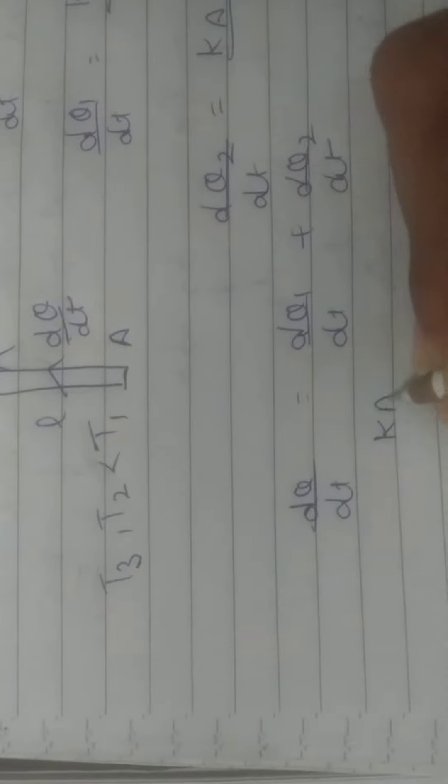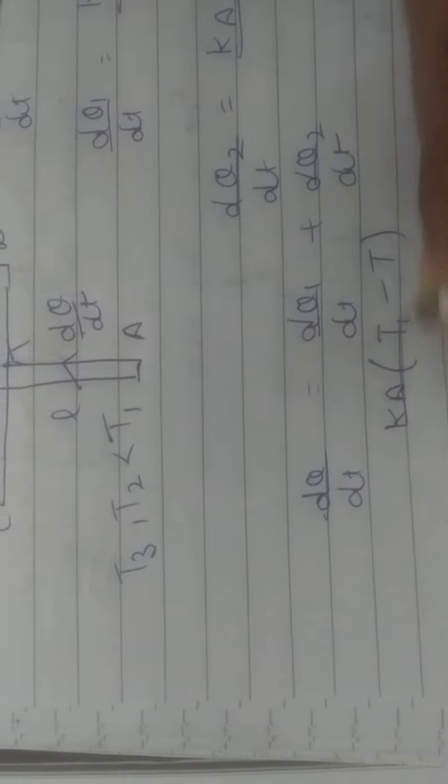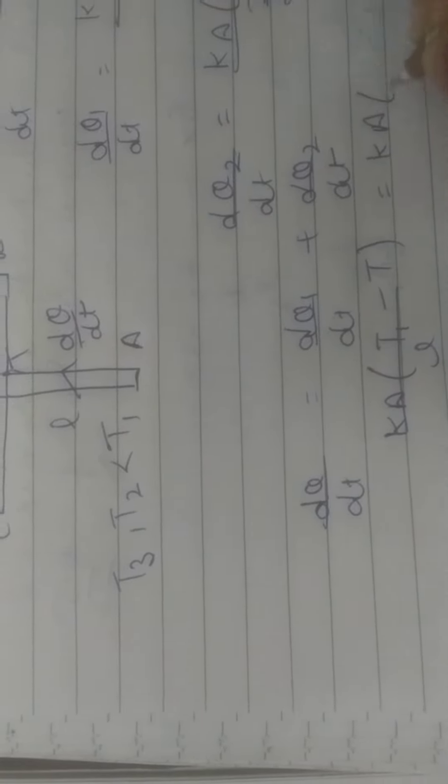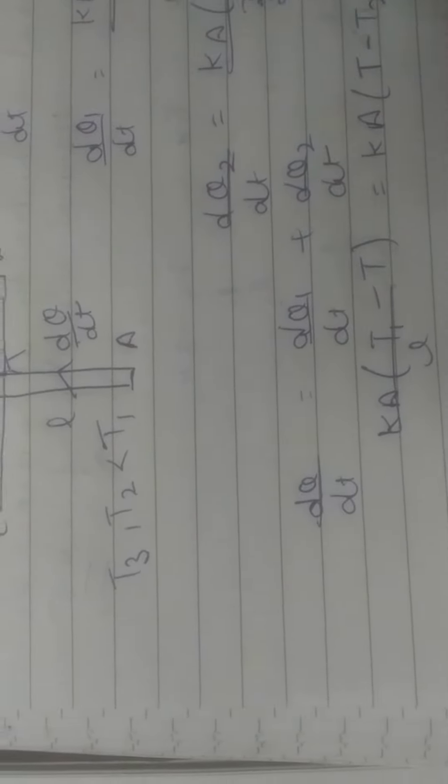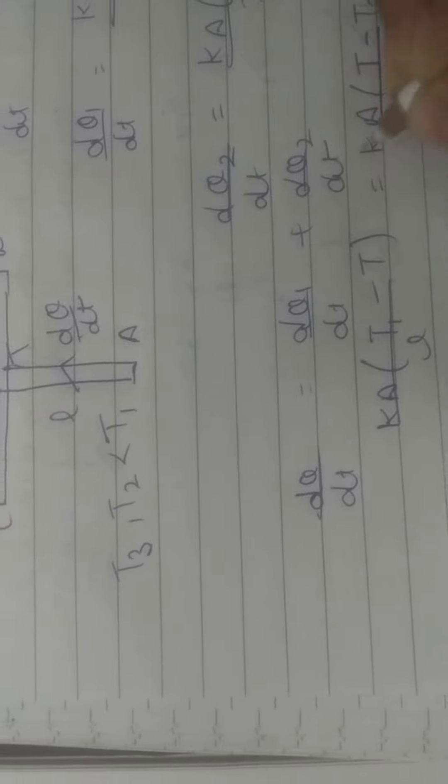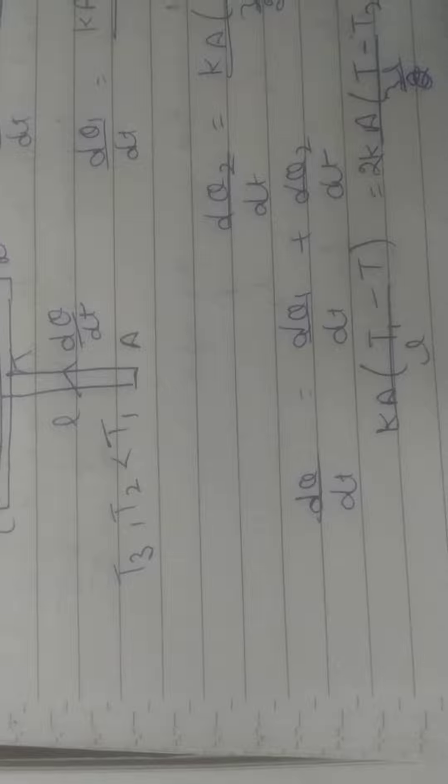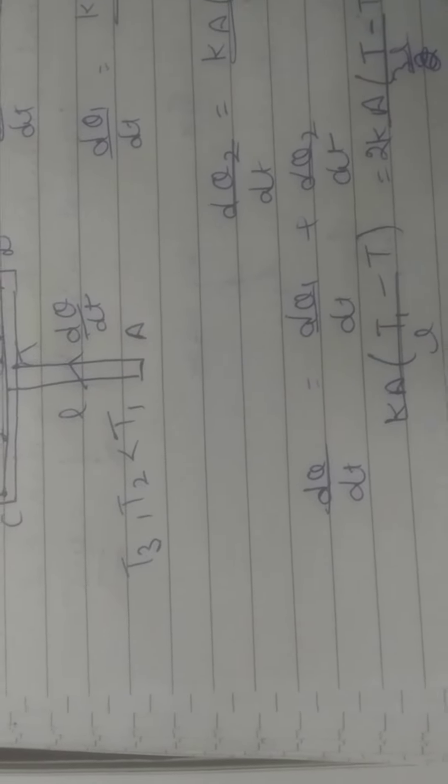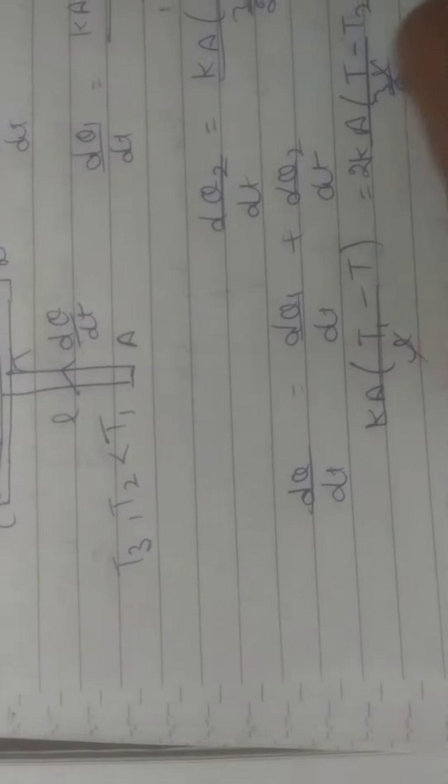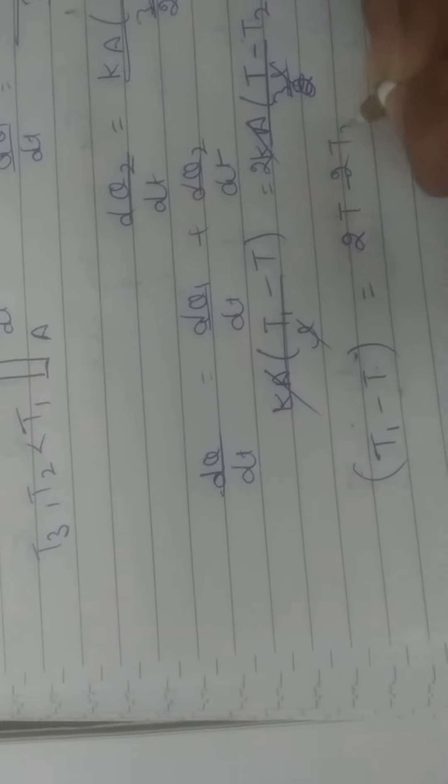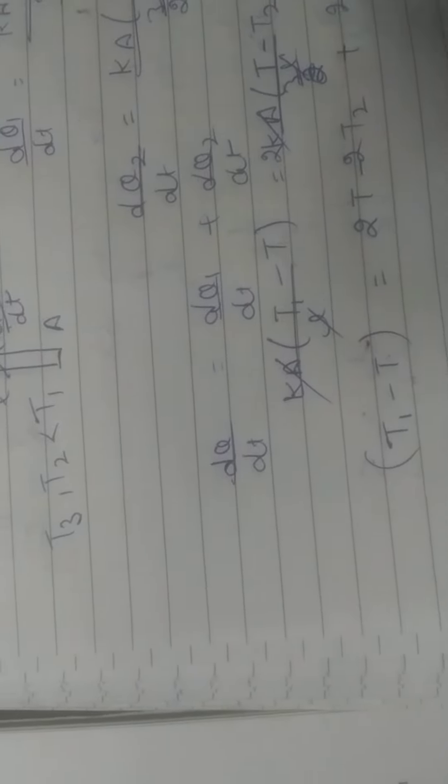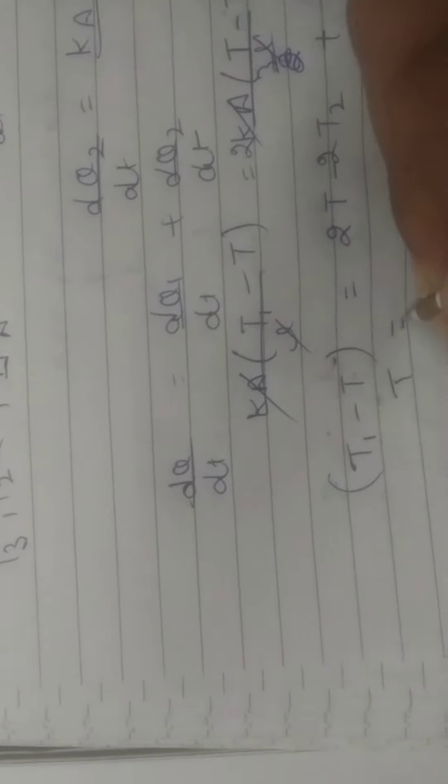Substituting and canceling L, K, and A terms: T1 minus T equals 2T minus 2T2 plus 2T minus 2T3. So 3T1 equals 4T minus 2T2 minus 2T3.